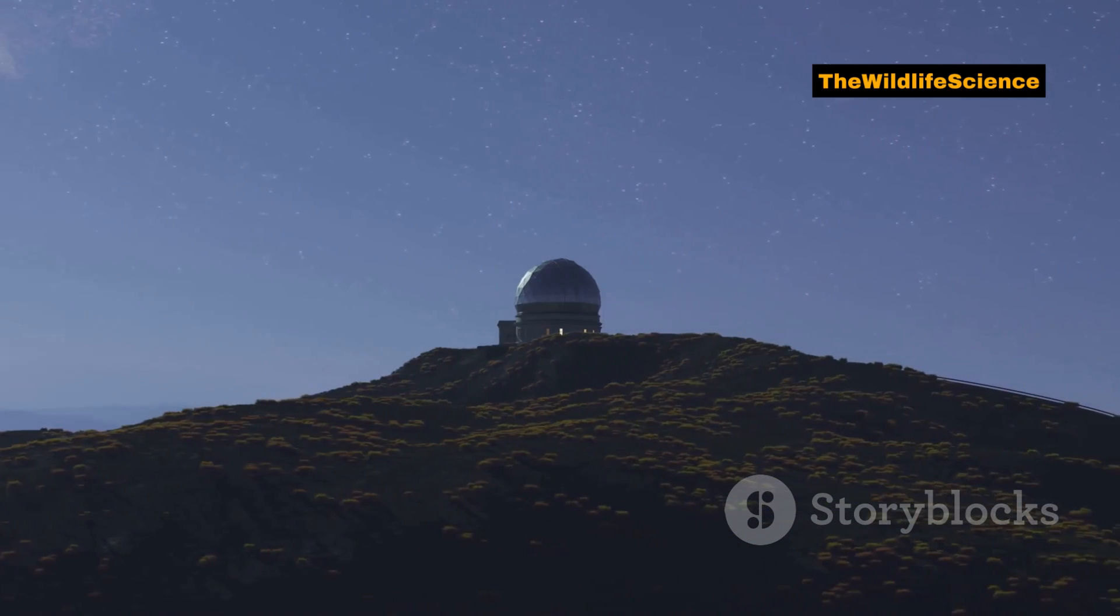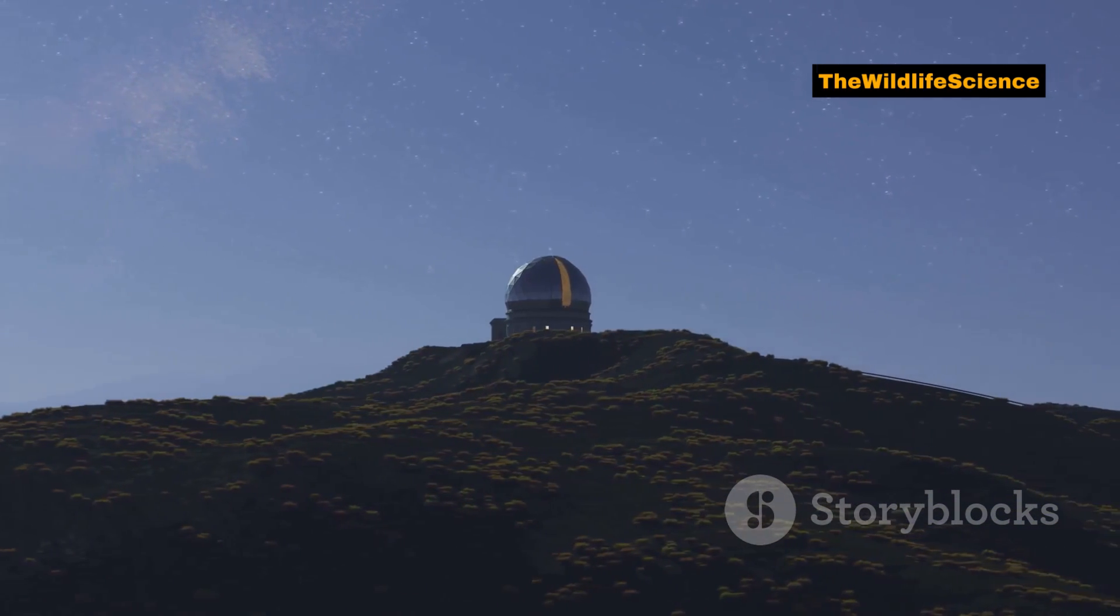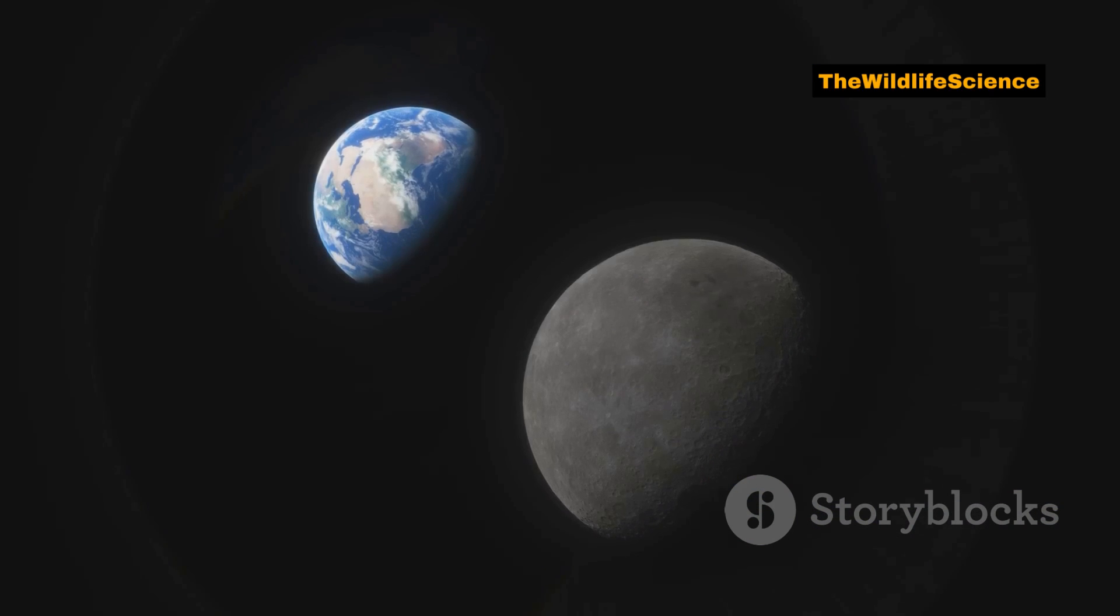But now, NASA has confirmed something that changes that story forever. Earth doesn't just have one moon anymore, it has two.